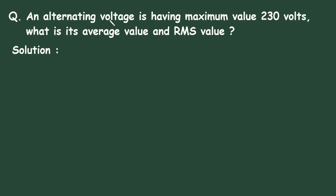Question: An alternating voltage is having maximum value 230 volts. What is its average value and RMS value?